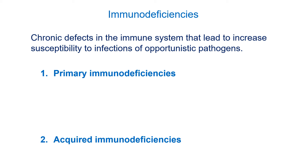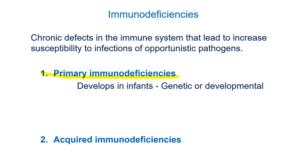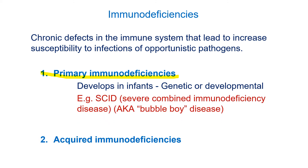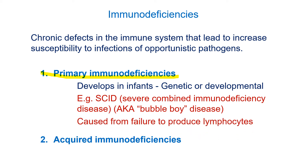Now let's switch to immune deficiencies. Mostly we'll be talking about HIV and AIDS, but there are a couple of other types worth mentioning. The first group are primary immune deficiencies — mostly genetic or developmental disorders. The most famous is SCID, where somebody has a genetic deficiency and has no B or T cells — no lymphocytes at all. These individuals are often called 'bubble boy syndrome,' where they must live in isolation. There are also other less severe genetic disorders that make people susceptible to certain infections, many of which go undiagnosed because the immune system compensates well.